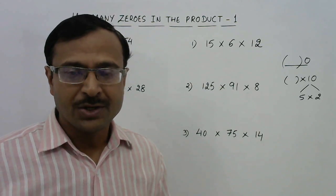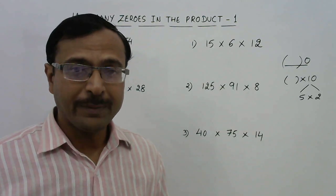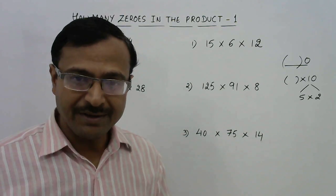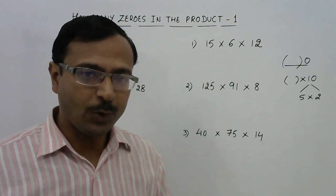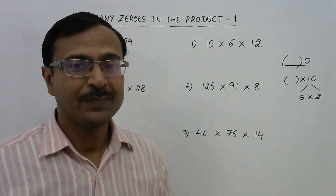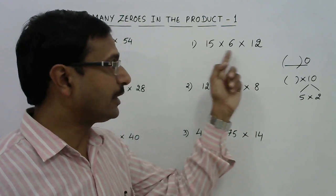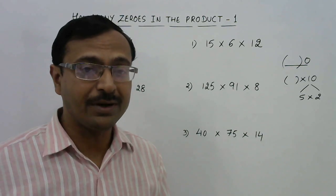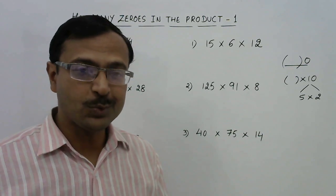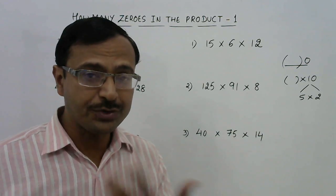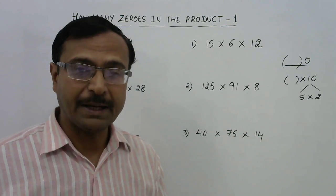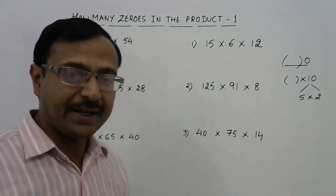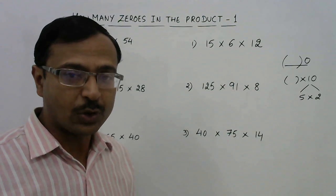How many zeros are contained in the product depends on how many fives and how many twos we have in the product of all the numbers. So we need to factorize each and every number and see how many twos and fives are there. Let us first factorize the first question and then I will tell you the rule.